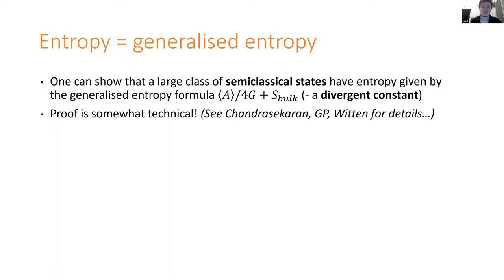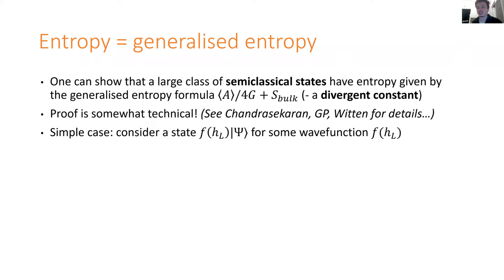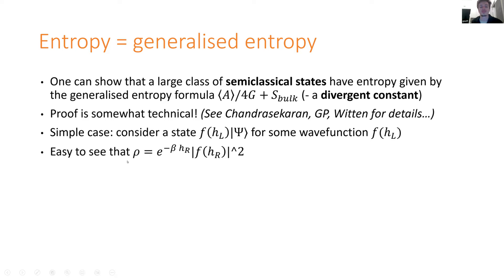The proof of this for general states is somewhat technical — you can read our paper for the details. But there's a particularly simple case that was already discussed by Witten from a boundary perspective in a paper he wrote last December, 'Gravity in the Cross Product.' That's just a state where the bulk quantum fields are all in the Hartle-Hawking state and we just have some wave function for the time shift, or equivalently some wave function for the left ADM mass. It's easy to check that the density matrix of this state on the right exterior algebra is given by the modulus squared of this wave function times e to the minus beta H_R.